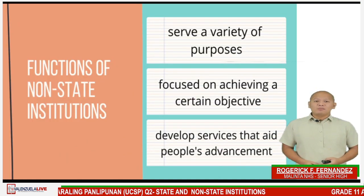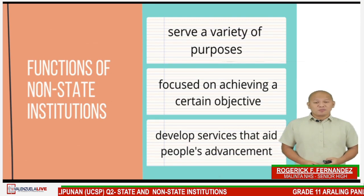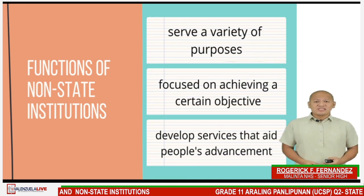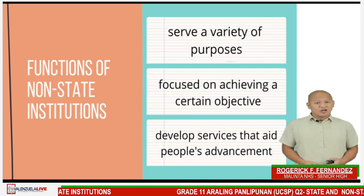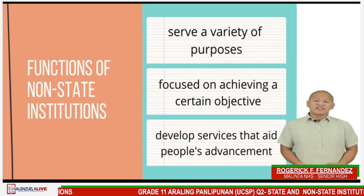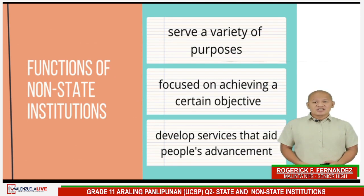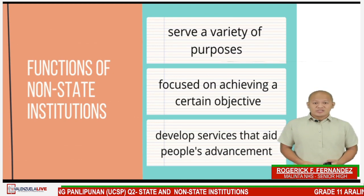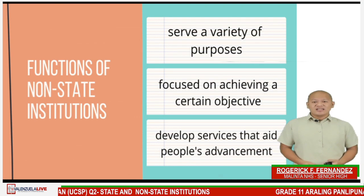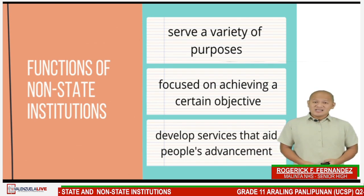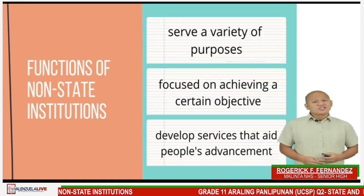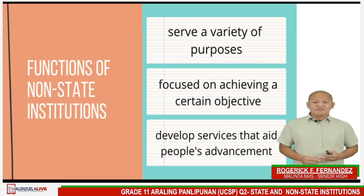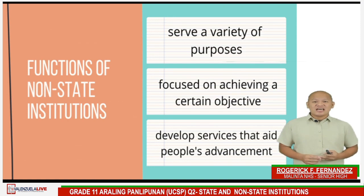Providing important public services is typically seen as the responsibility of the state. However, there can be situations wherein some state institutions are delivering water, sanitation, education, and health. There are also situations wherein services are primarily delegated to private sectors or entities as allowed by government laws. These are being provided instead by non-state institutions. As such, non-state institutions serve a variety of purposes, focus on achieving a certain objective, and they develop services that aid people's advancement.